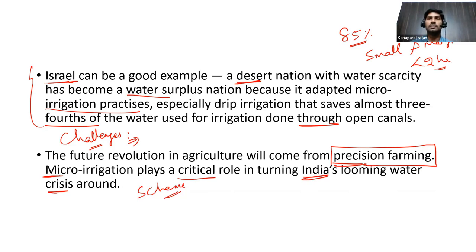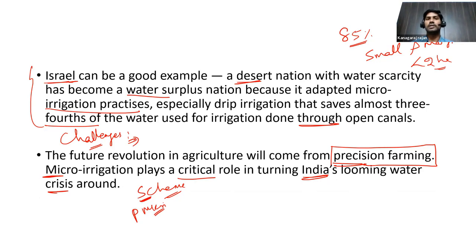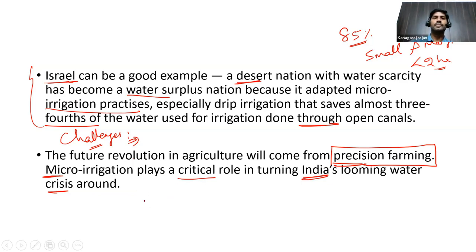In the way forward for the micro irrigation question, you can also mention the Pradhan Mantri Krishi Sinchayee Yojana scheme, which promotes micro irrigation. Mentioning the scheme name in the conclusion part will give you extra marks.